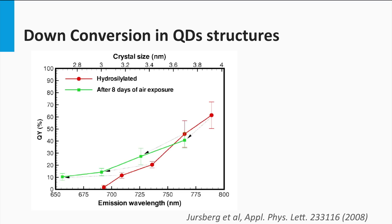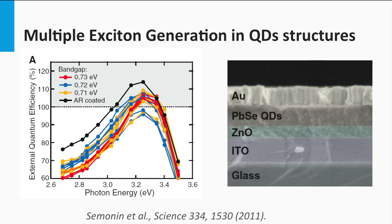Here you see some experimental results on down-conversion based on silicon quantum dots, from a paper by Hueur-Sperger et al. At around 790 nm, a down-conversion efficiency of 60% is achieved. Results from a paper by Simonin demonstrate that EQEs above 100% can be achieved using an absorber layer with lead-selenite quantum dots. In the blue region, from 3.1 up to 3.4 eV, the quantum dots realize an EQE above 100%. The challenge is to move this spectral response to lower photon energies, as the solar spectrum contains far more photons in this spectral range.